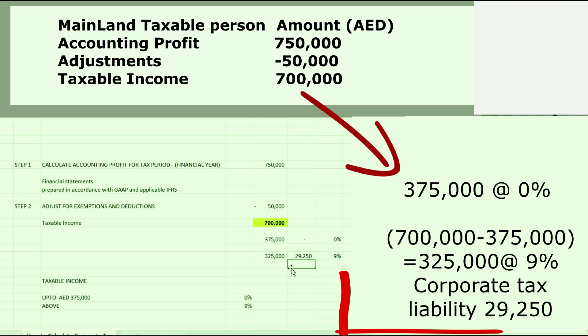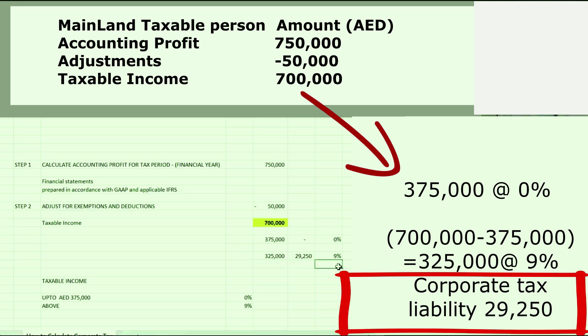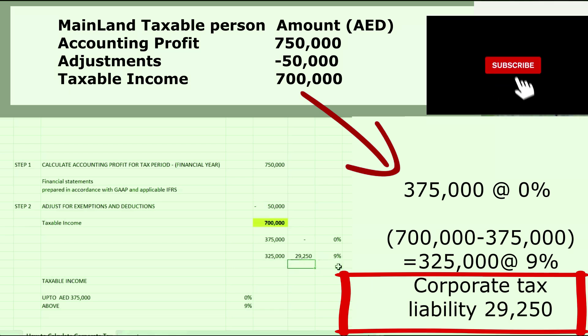So your total corporate tax liability — assuming this taxable person has no other credits available — will be calculated on the 325,000 at nine percent. That will be the total tax liability for this person to pay. Thank you.